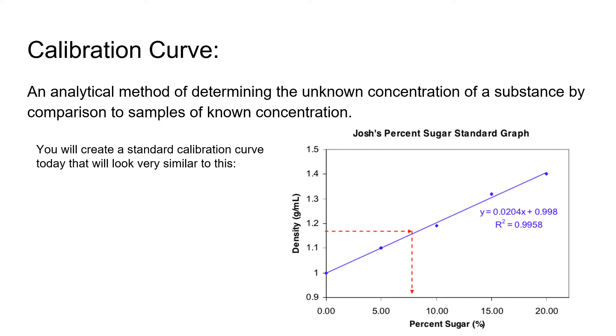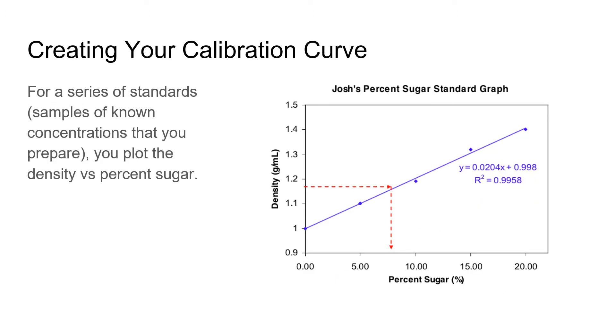You're actually going to create a calibration curve that looks very similar to this. The way that you do this is by creating a series of standards. A standard is a sample that has a known concentration that we will prepare ourselves. You know the percentage of sugar in those standards, and then you can figure out the density of those standards and plot the percent sugar versus the density.